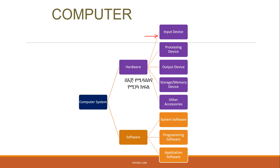If you have a processing device, you can use the processing unit. If you have an output device, you can use the output device and store data on the storage device. You can use the computer to access your device — it's easy to use.